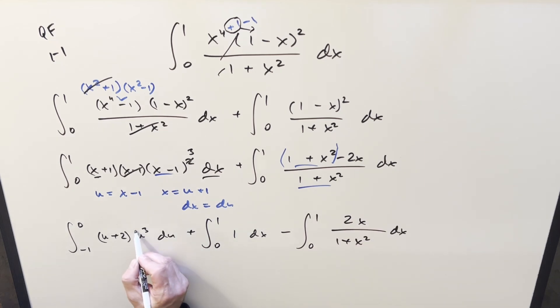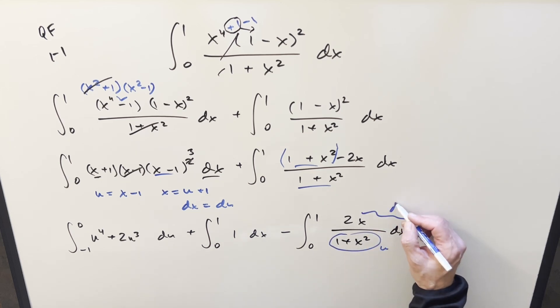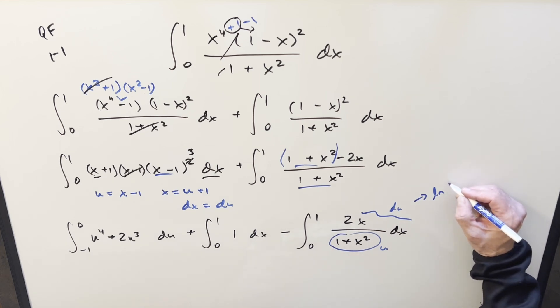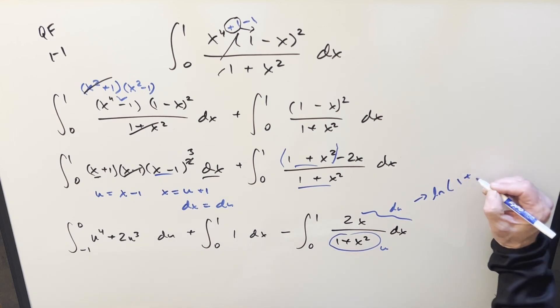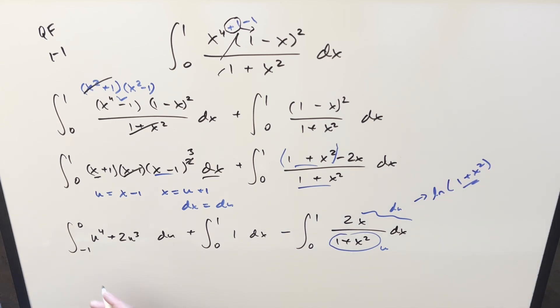On this first one let's just distribute the u cubed back in we'll have u to the fourth plus two u cubed. On this last one we could do a u substitution but I think let's just do it in our head. If you want to do the u substitution out it would be this is u but then the whole numerator is du. So when we have du over u we can just use a formula and we know it's natural log of absolute value of u but in this case it's always positive so what's going to happen is we're going to get natural log one plus x squared with this being the u value.